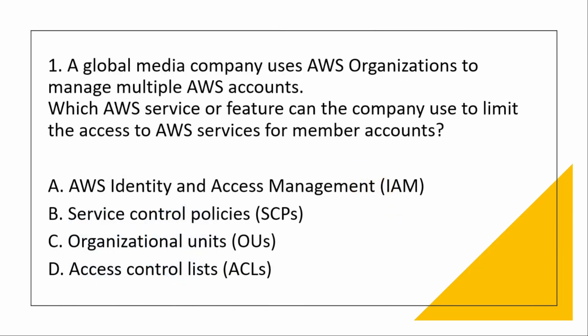A global media company uses AWS Organizations to manage multiple AWS accounts. Which AWS service or feature can the company use to limit access to AWS services for member accounts? The answer is Service Control Policy (SCP). It is a policy that specifies the services and actions that users and roles can use in the accounts, and it can operate across organizational units.